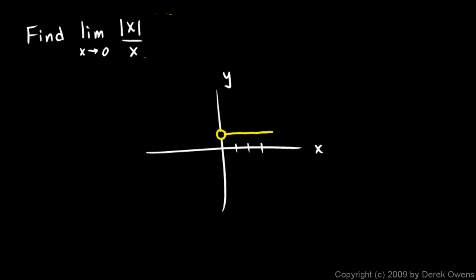So that gives us a negative 1. Or if we have a negative 2, put in negative 2 for x, then that gives us 2 over negative 2, which is negative 1.